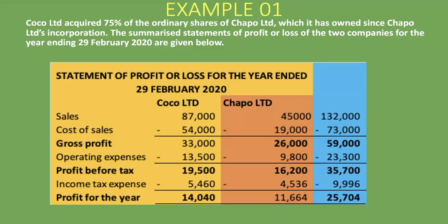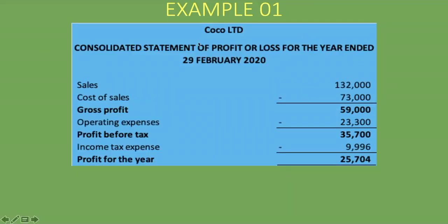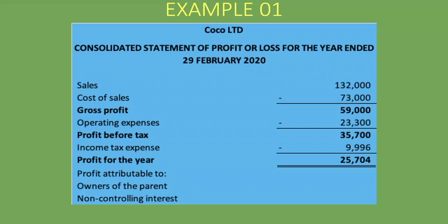Now let's see how the consolidated statement of profit or loss looks. We have the name of the parent company — Coco Limited — and the statement heading: Consolidated Statement of Profit or Loss for the year ended 29 February 2020. It contains everything we added up, with a total profit of 25,704 rand. Now we show what belongs to the group and what belongs to the non-controlling interest. We write 'Profit attributable to' followed by 'Owners of the parent' and 'Non-controlling interest.'